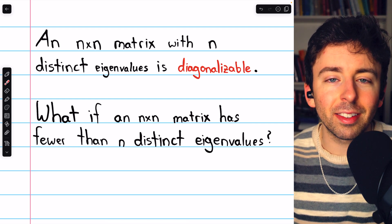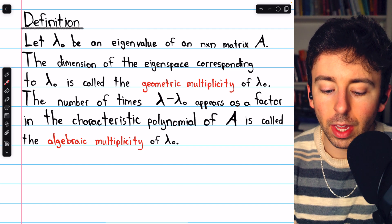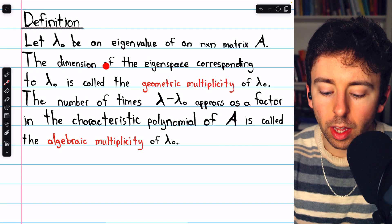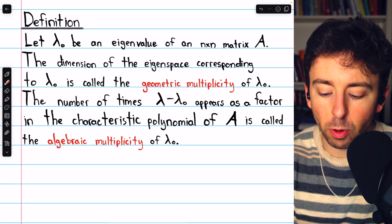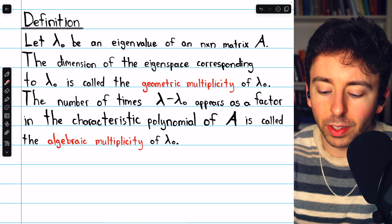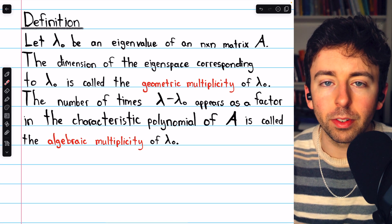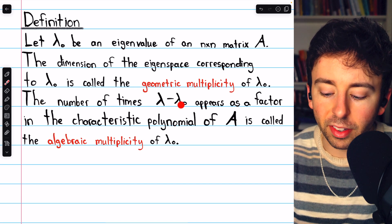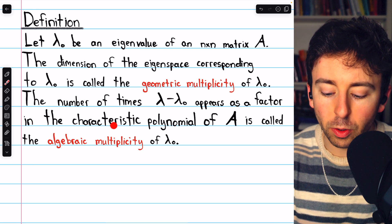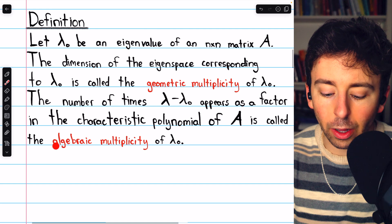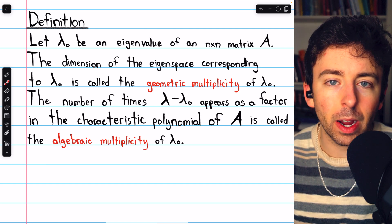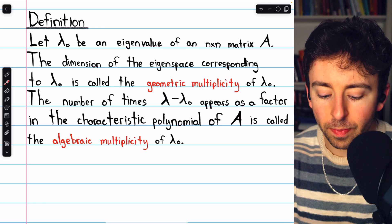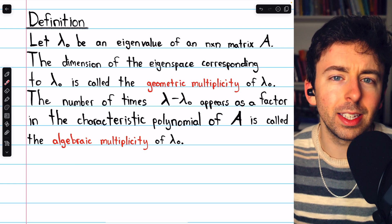This idea suggests a new definition. Let lambda 0 be an eigenvalue of an n by n matrix A. The dimension of the eigenspace corresponding to lambda 0 is called the geometric multiplicity of lambda 0 — that's the number of vectors in a basis for the eigenspace. The number of times lambda minus lambda 0 appears as a factor in the characteristic polynomial of A is called the algebraic multiplicity of lambda 0.